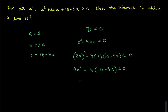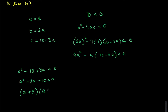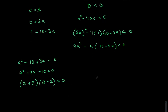Dividing both sides by 4, we get a squared plus 3a minus 10 less than zero. Factoring, we have (a plus 5)(a minus 2) less than zero. The critical points are a equals negative 5 and a equals 2.